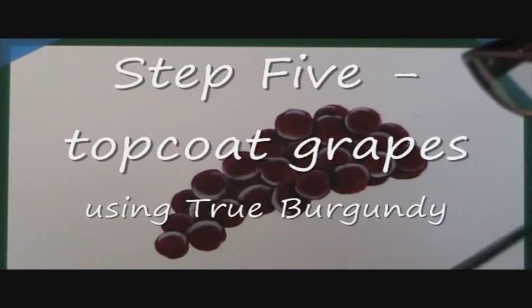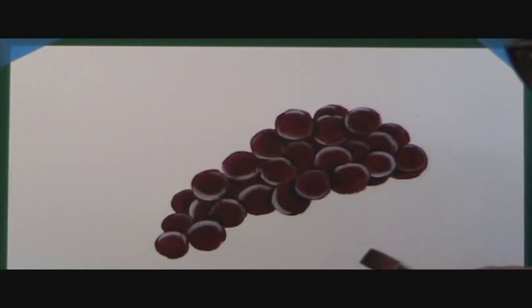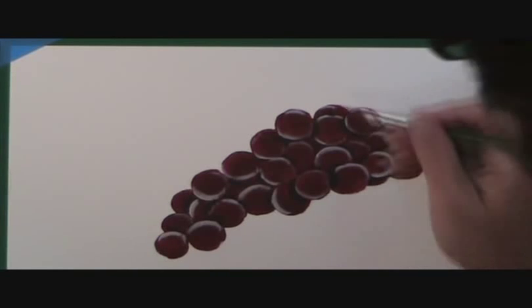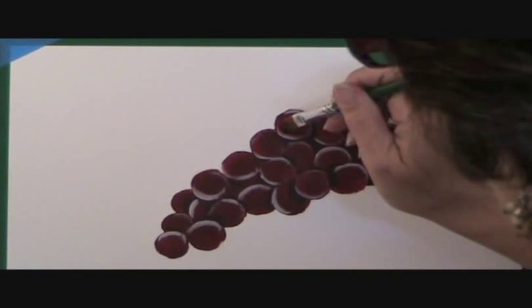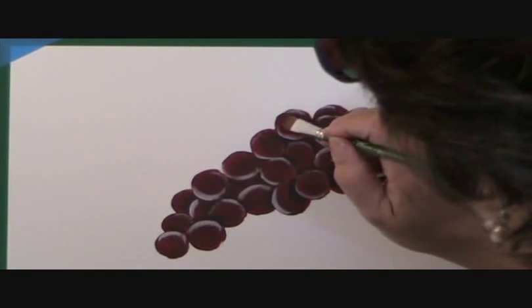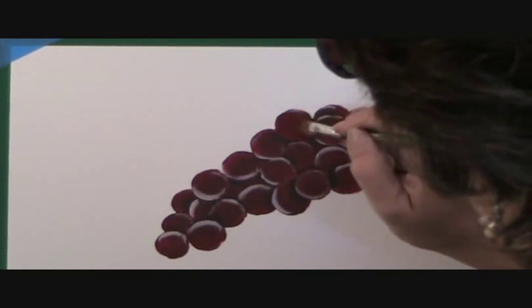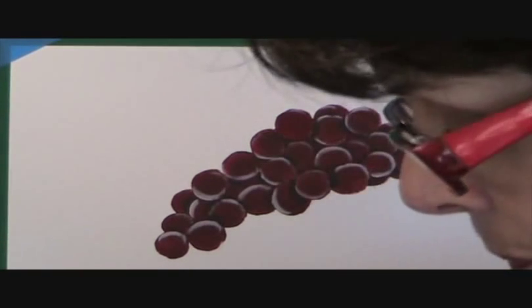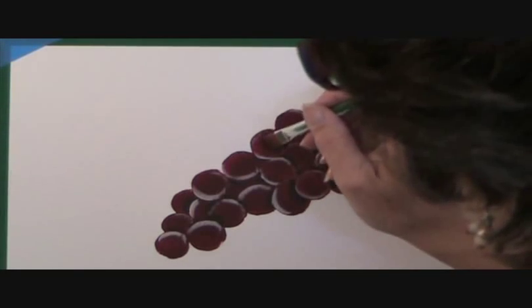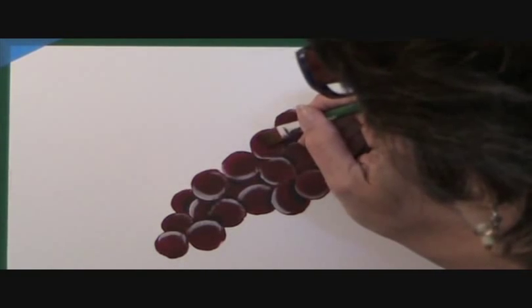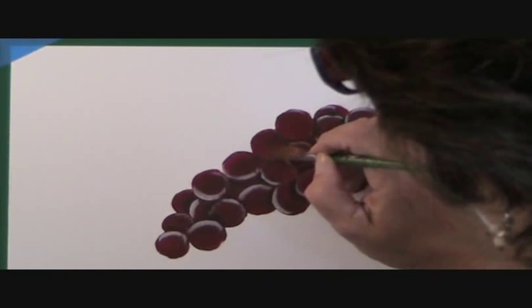My shading's done, my highlighting's done, and now it looks pretty messy, huh? But watch what happens. We're going to take the same red that we started with, the true burgundy, and we're just going to go ahead and go right back over the grapes. This time I'm going to actually paint in circles though. When you first get started, it's going to seem like you're just covering up everything that you just painted, the highlighting and the shading, but you're not. It's going to peek through.